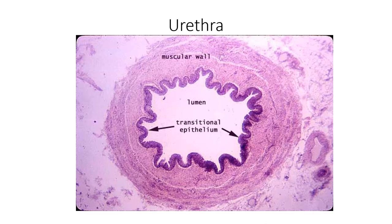The urethra should look familiar — it has the same construction as the ureter. It is composed of transitional epithelial tissue that allows for stretching as urine travels through, a muscular layer, and an outermost adventitia layer.